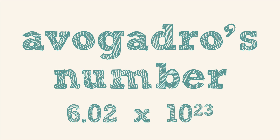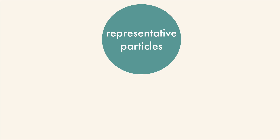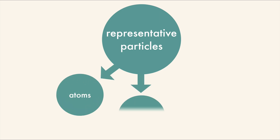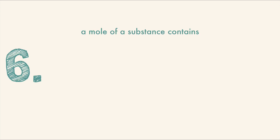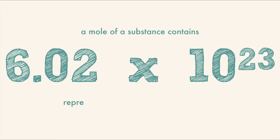When we use the mole, we have to clarify what we have a mole of. So we use representative particles. It could be atoms, or molecules, or formula units. A mole of a substance contains 6.02 times 10 to the 23rd representative particles of the substance.